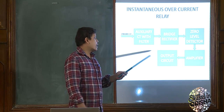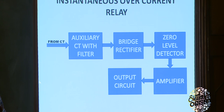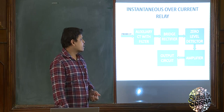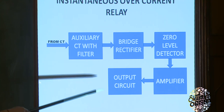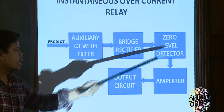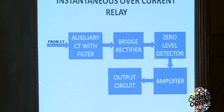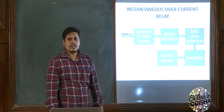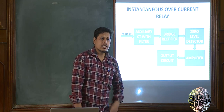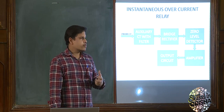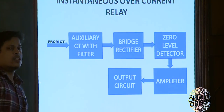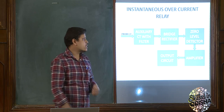After that, the signal is provided to the bridge rectifier. The function of the rectifier is to convert AC to DC. Since this is a static component, the DC value is measured and the output of the DC is given to the zero level detector. The zero level detector is a comparison device consisting of resistors, capacitors, and potentiometers. There is a preset value in it — it compares the input current with the preset current already set in the potentiometer.